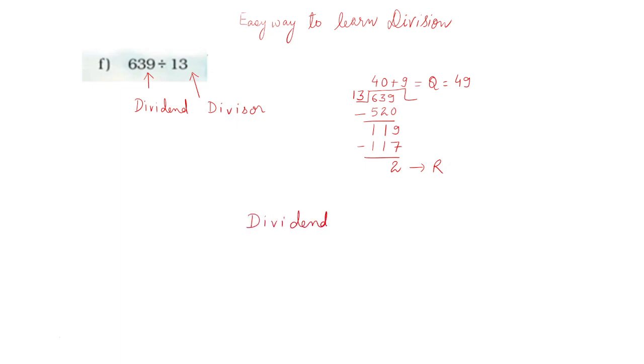You can check your answer also. As you all know, dividend equals divisor into quotient plus remainder. So divisor is what? Divisor is 13, quotient is 49, and remainder is 2. So you can check your answer.